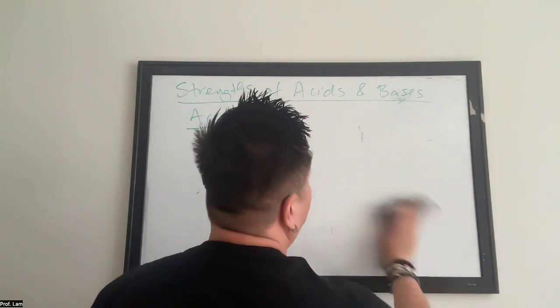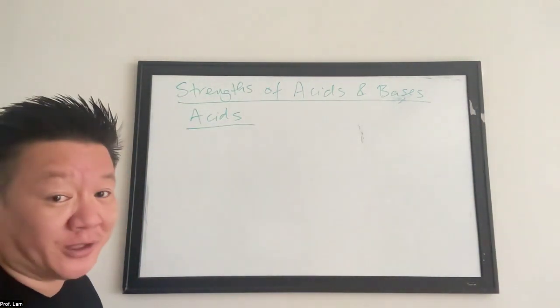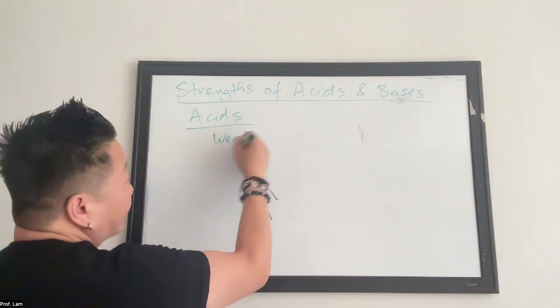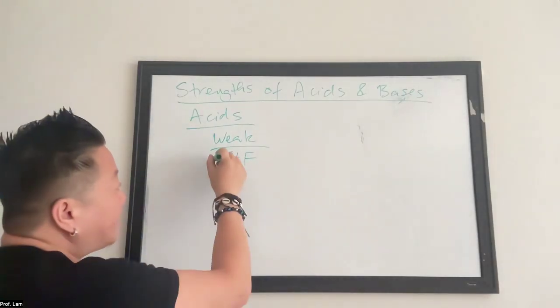All right. Let's go to the weak list. If you know strong, you actually already know weak as well, because if it's not strong, then it's weak. But we can spell it out. HF, right? We just said HF is weak.